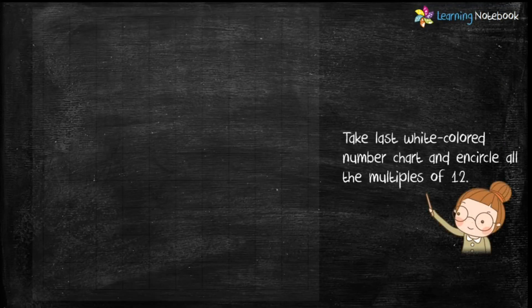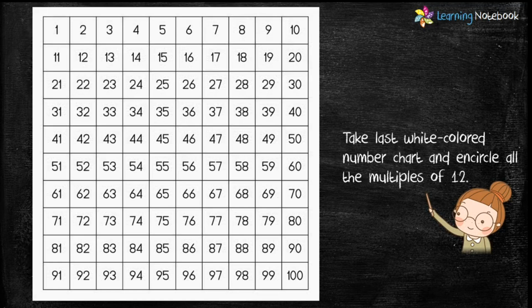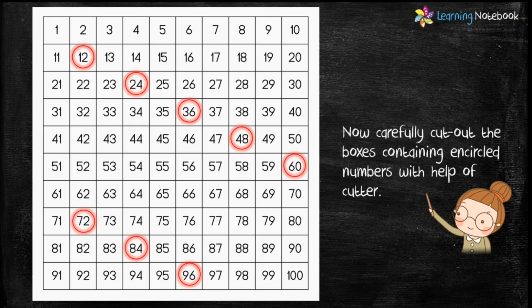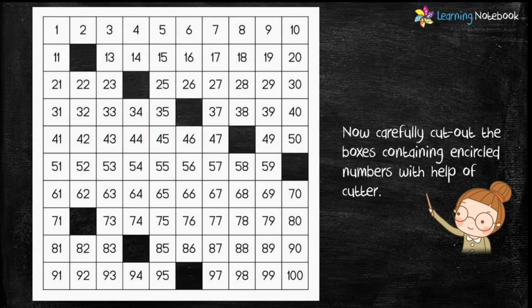Now take the last white colored number chart and encircle all the multiples of 12 up to 100, like 12, 24, 36, 48, and so on. Now carefully cut out the boxes containing the encircled numbers with the help of a cutter. So when you have cut out all the multiples of 12, the sheet looks like this.